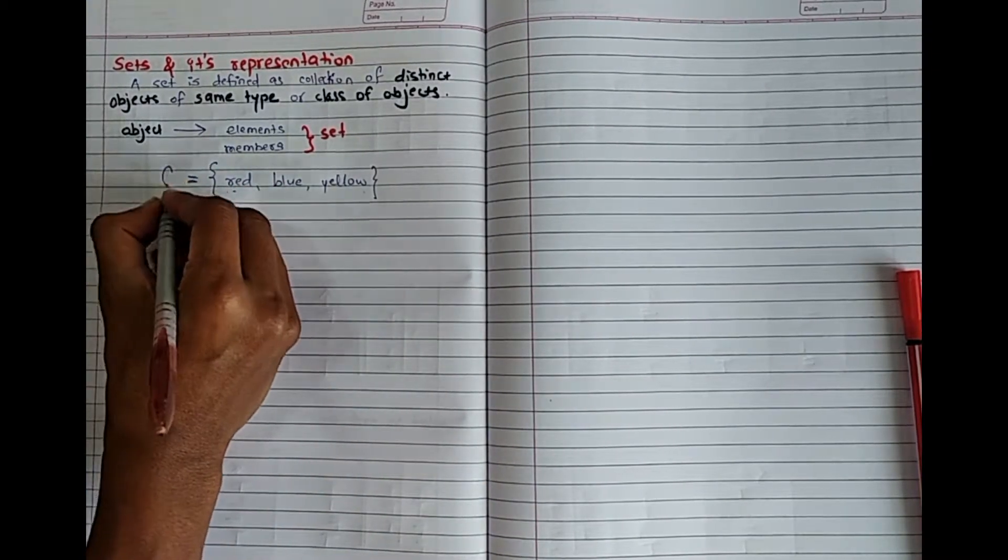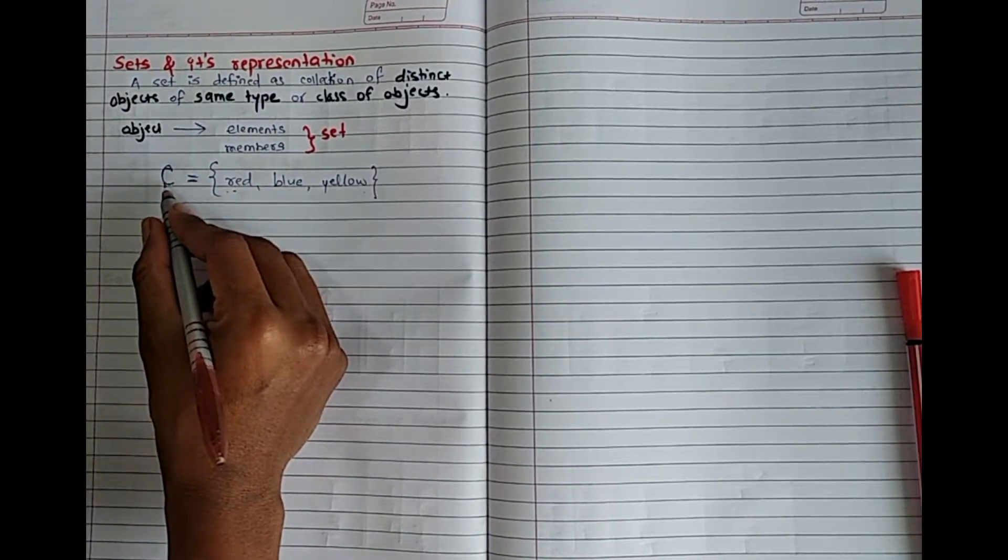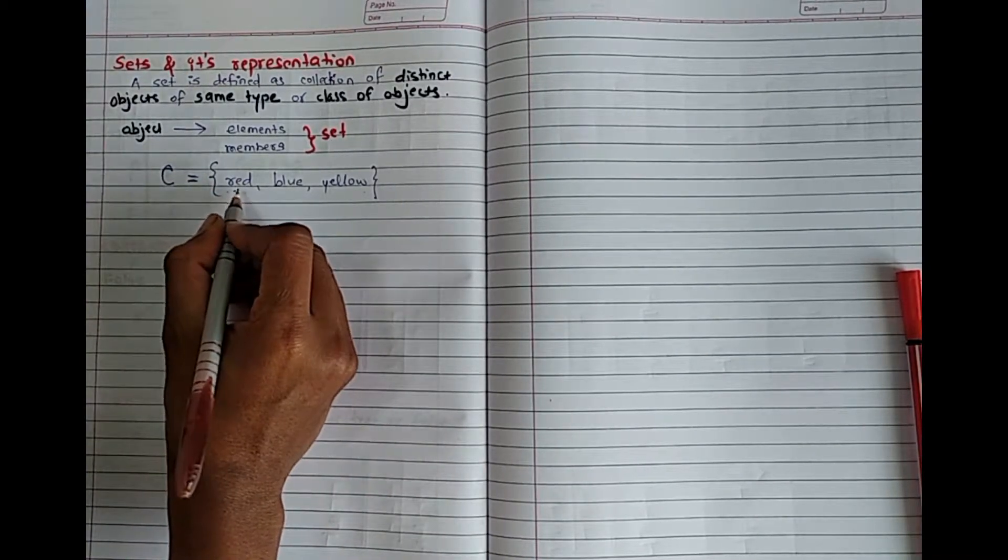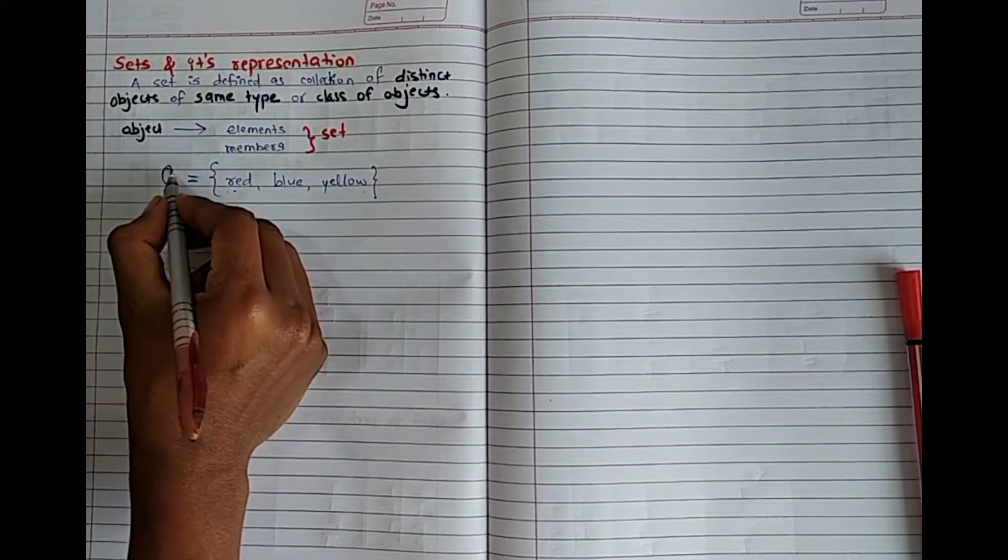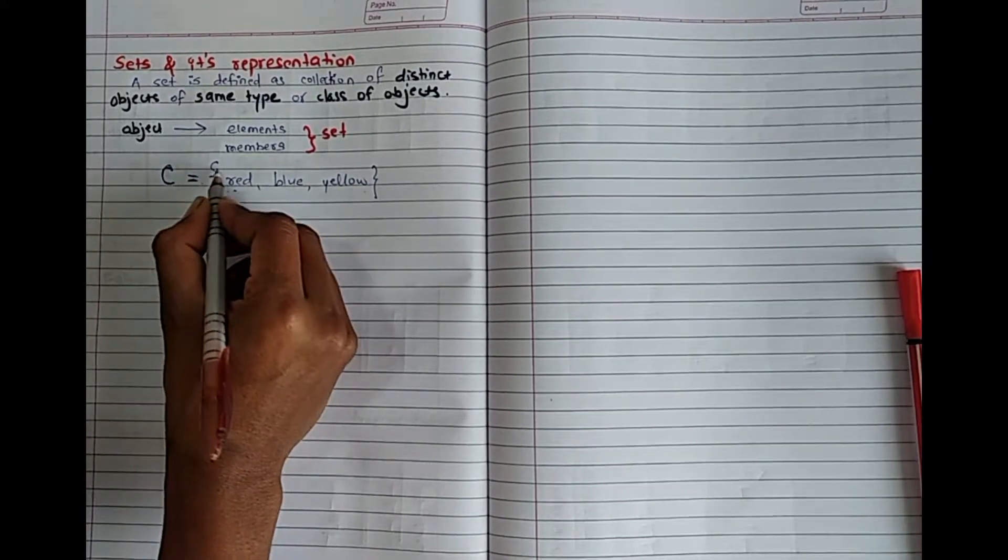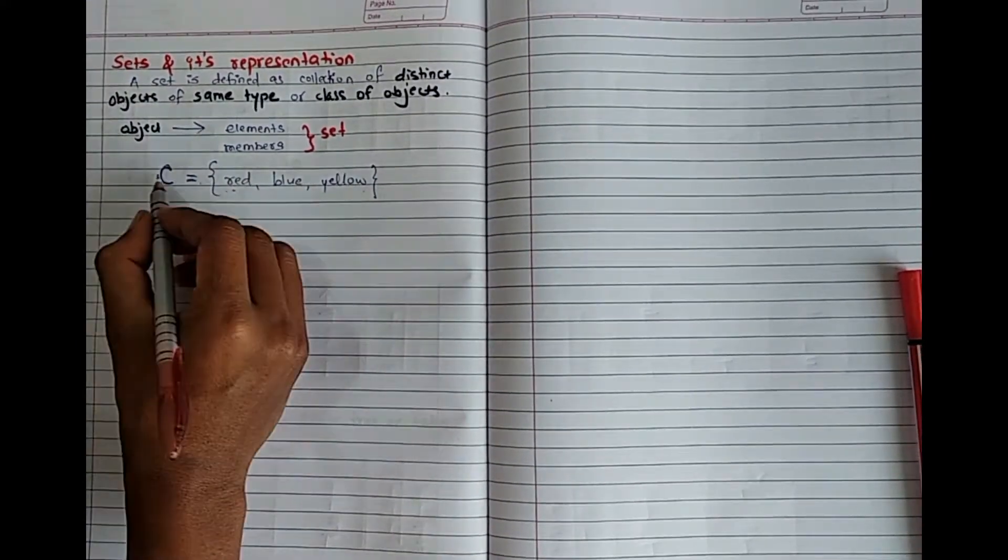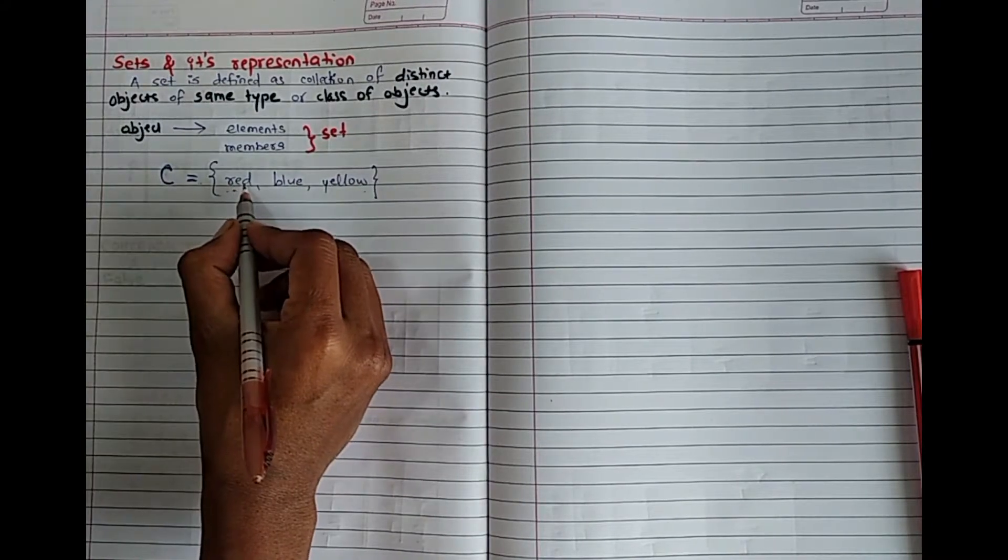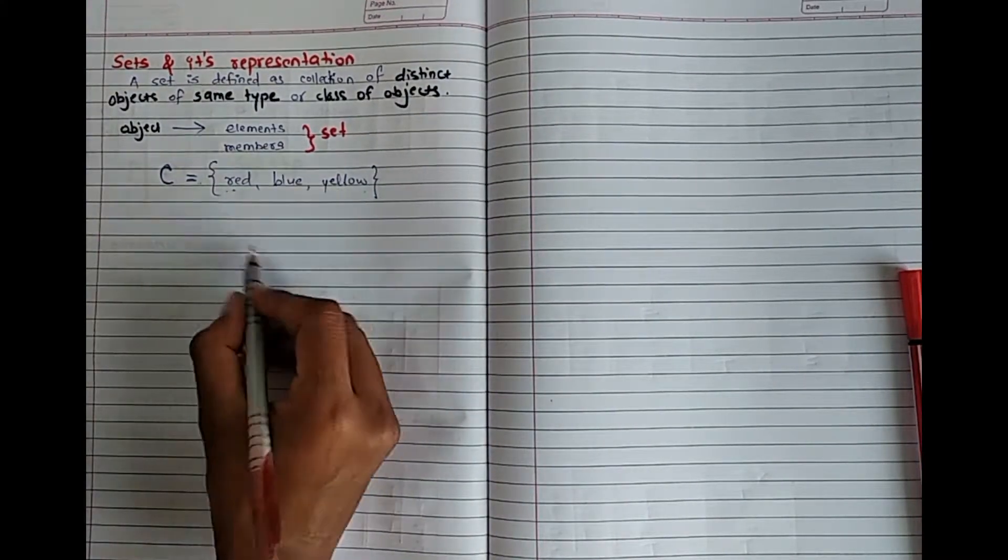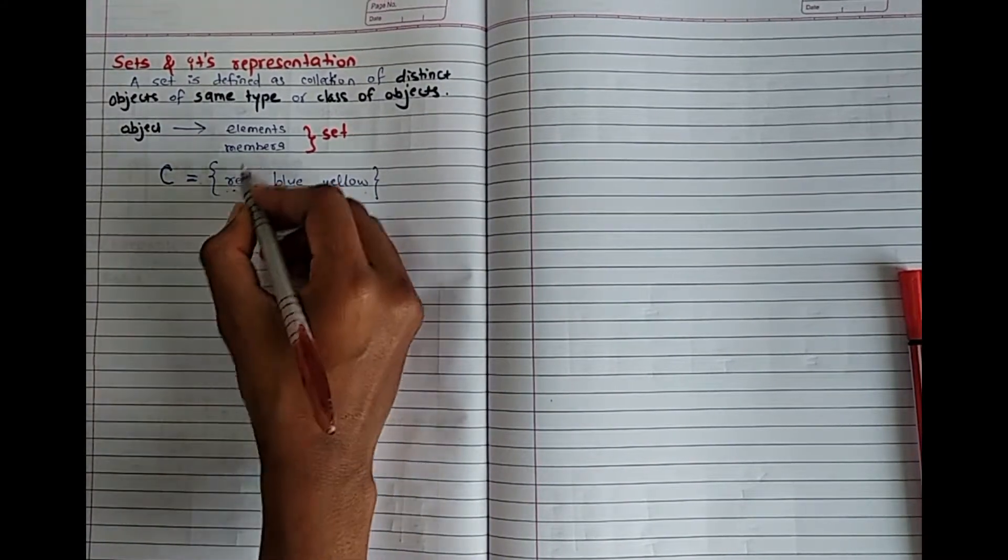So this is the basic representation of the set. What is the set? I will write in the curly brace. So C is my set which consists of red, blue and yellow.